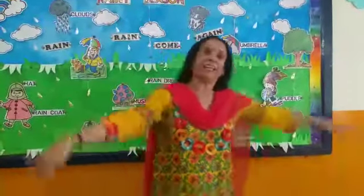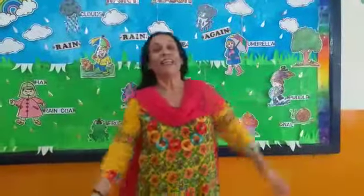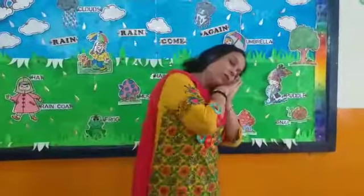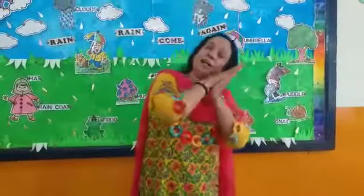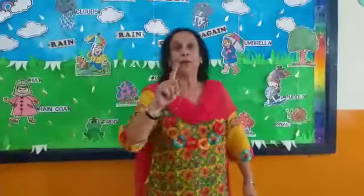Chidiyah, chidiyah, udti jay. Chidiyah, chidiyah, khushi se gai. Teen chhoti chidiyah, gai daal piso. Teen chhoti chidiyah, gai daal piso. Ek udke chaligay, baaki bachi do.